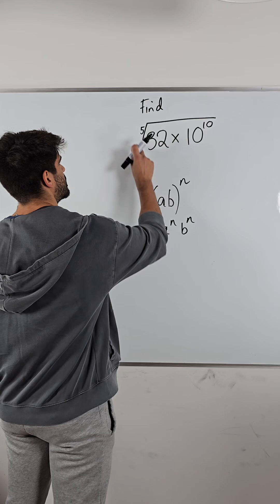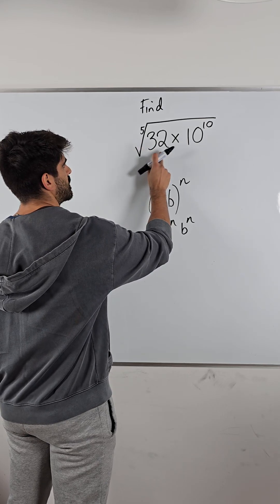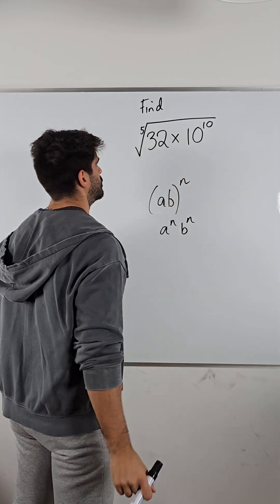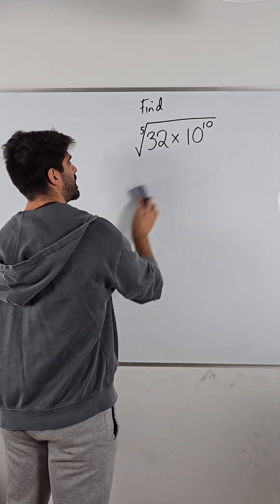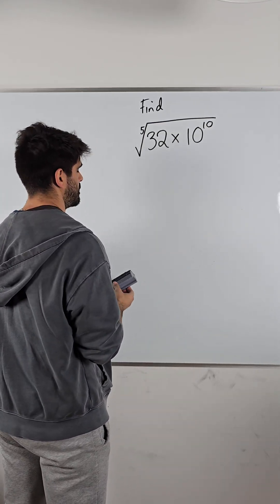So all I need to do is do the fifth root of 32. Because it's a product, I can then do the fifth root of 10 to the power of 10. So it's easier if you think of this in terms of powers.